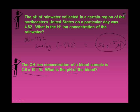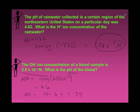Here we have a hydroxide concentration given and need to find the pH. This is a base problem, so I find pOH first: pOH equals the negative log of the OH− concentration, which gives 6.6. Then pH equals 14 minus 6.6, which gives 7.4.